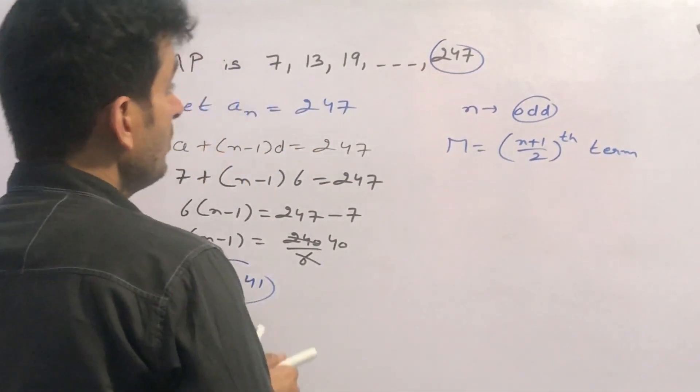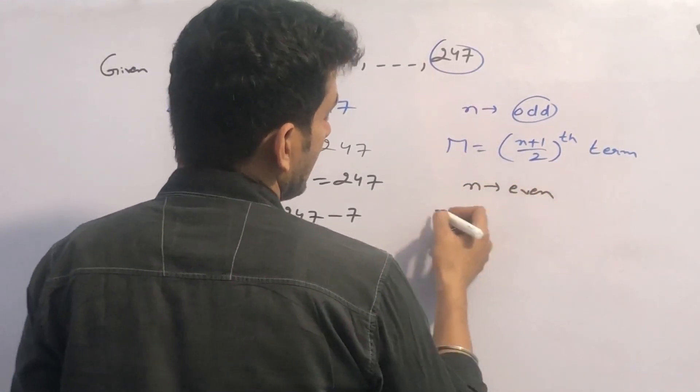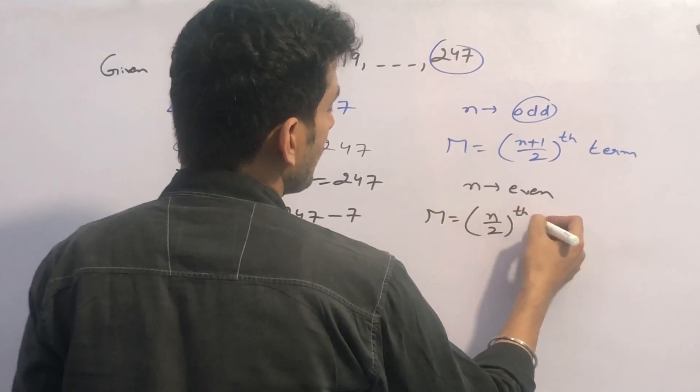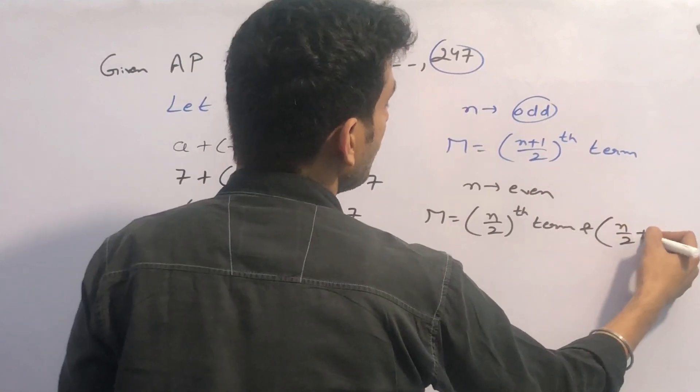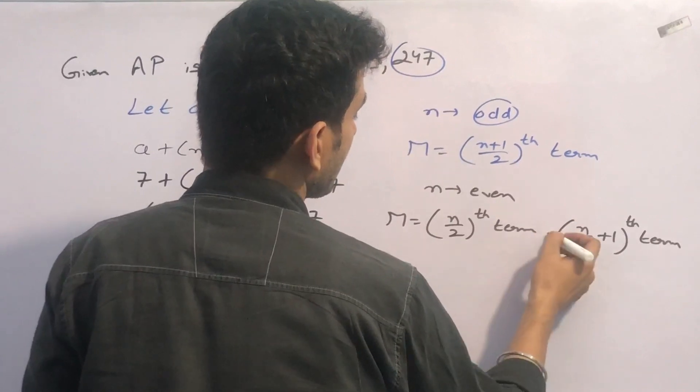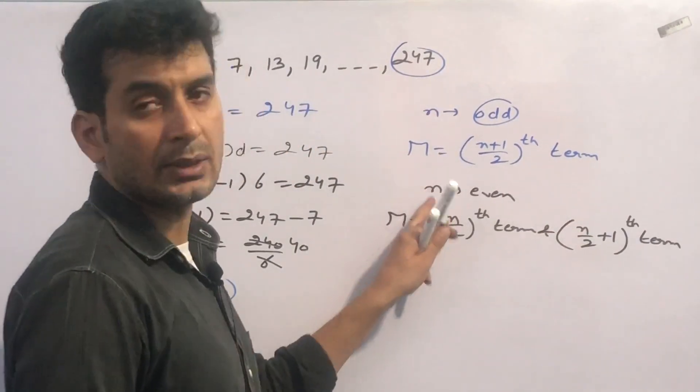But if N's value is even, if N's value is even, in that case the middle term will be N by 2 th term. Then there will be 2 middle terms: N by 2 th term and N by 2 plus 1 th term. In that case if N's value is even, there will be 2 middle terms.